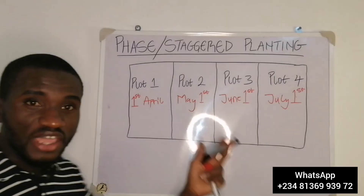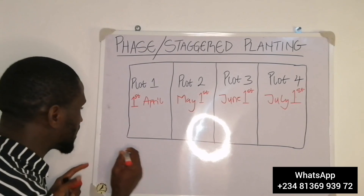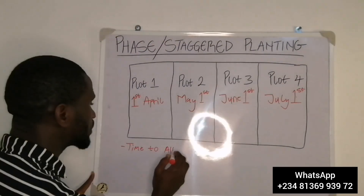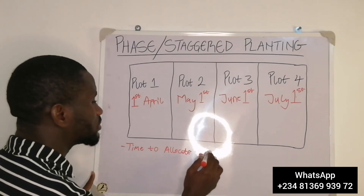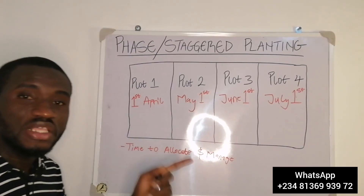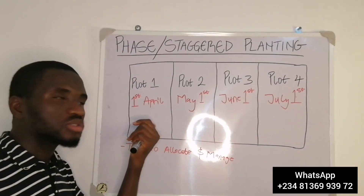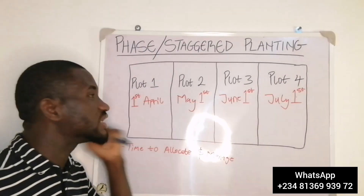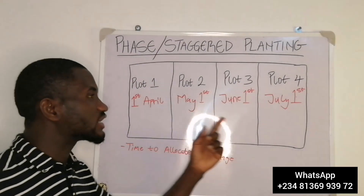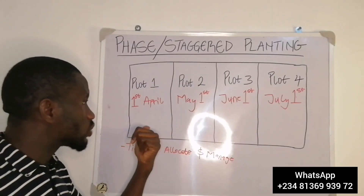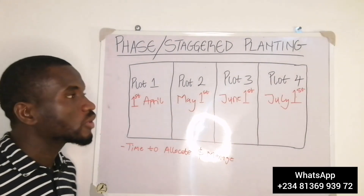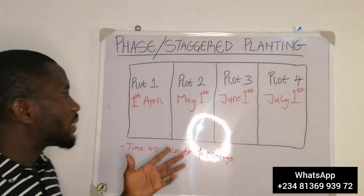The first benefit farmers can derive from this is that it gives you time to allocate and manage. While you are planting the first plot, the other fields won't be at the same developmental stage. While one field is due for fertilizer application, another will not be. So you can allocate your resources and manage your labor very well. That is the number one advantage.